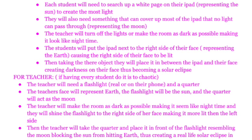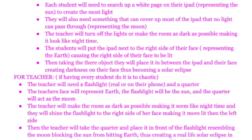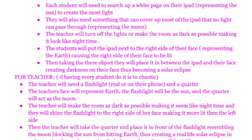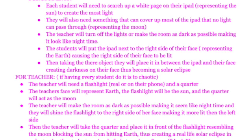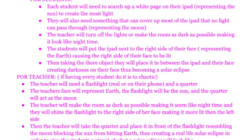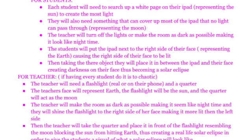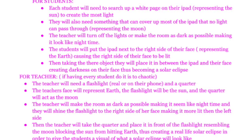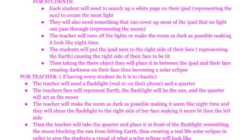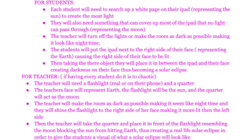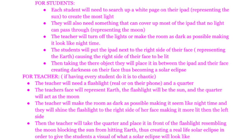The procedures for the students in this activity are: each student will need to search up a white page on their iPad — this will represent the sun. They will also need something that can cover up most of the iPad that light won't pass through — this will represent the moon. The teacher will turn off the lights, or make the room as dark as possible, making it look like nighttime. The students will put the iPad next to the right side of their face, representing the Earth, causing the right side of their face to be lit. Then, taking their object, they will place it between their iPad and their face, creating darkness on their face, thus becoming a solar eclipse.